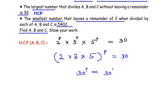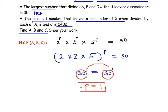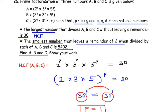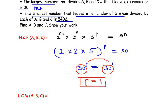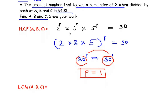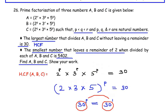Since the bases are the same (30 = 30), we equate the powers and get p = 1. So we have found the value of p using the HCF. Similarly, let us find the values of q and r using the LCM — that is, the smallest number for a, b and c. Let me write the LCM of a, b and c.